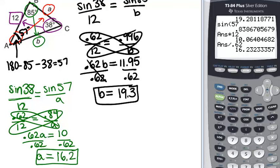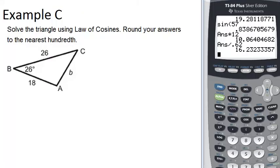So that's how you use the law of sines to find missing sides in non-right triangles. Next, we're going to look at example C, which helps us to practice using the law of cosines.